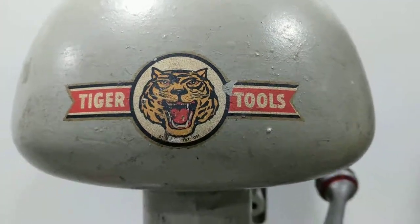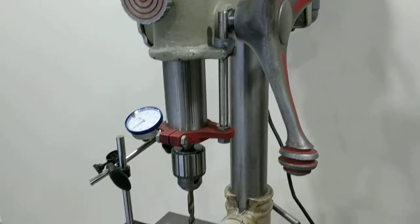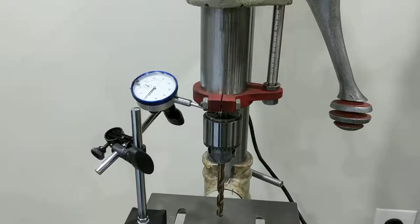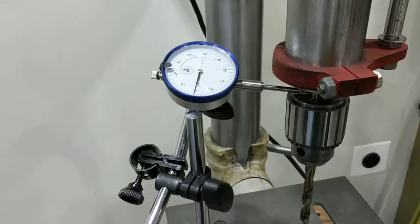I'm measuring the run-out on my Tiger Tools drill press. I've set up a run-out gauge here and I've lowered the quill to about three and three-quarter inches. That's like a quarter inch less than its full extension.